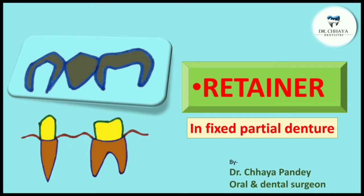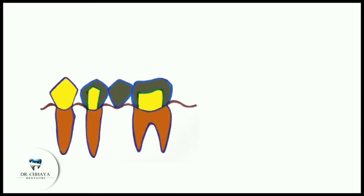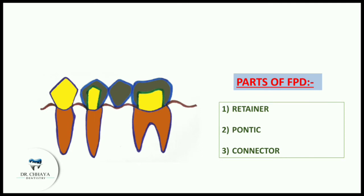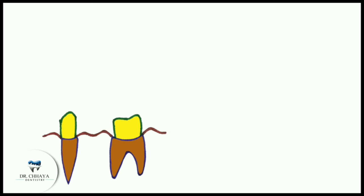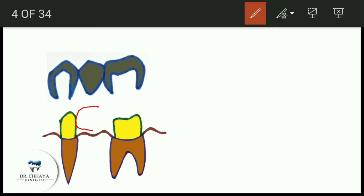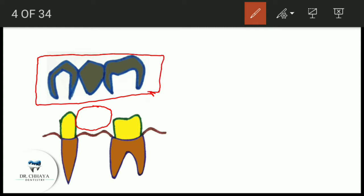In the last video on FPD, which was on the components of FPDs, we studied that there are three components: first is the retainer, second is the pontic, and the third is the connector. Let's have a quick look at the components of FPD once again. Here, this is the tooth we want to replace by the fixed partial denture — this is a pontic, and these are retainers.